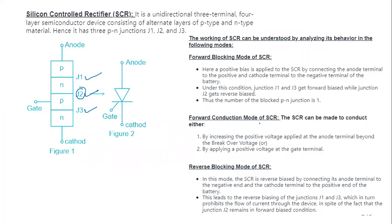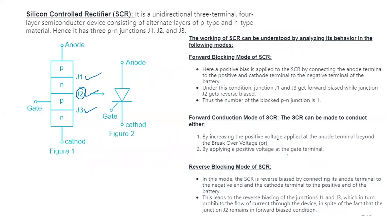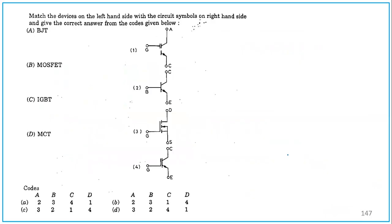Forward conduction means SCR can be made to conduct, and the answer to the number of PN junctions in a thyristor is 3, not 2. Three junctions are there. And reverse blocking mode also, you can just verify. If an SCR is said to be reverse biased, this leads to the reverse biasing of junctions J1 and J3. Two junctions will be reverse biased. Two junctions will be off. If it is blocked, the PN junctions will be 2 if it is reverse biased. This is a very interesting question.